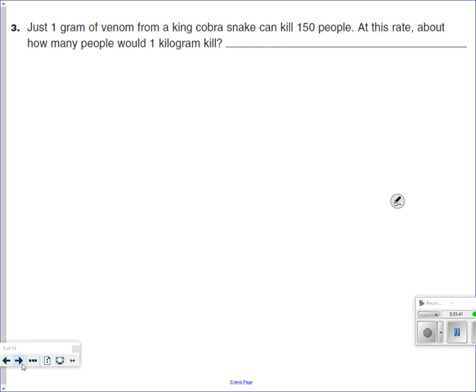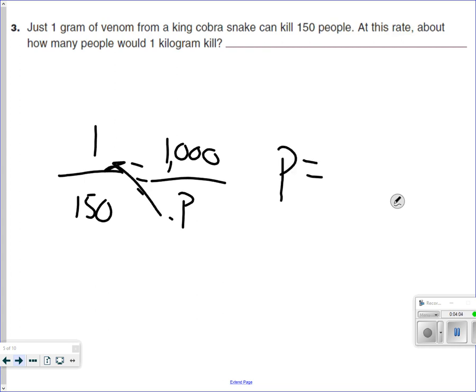Let's do another one. Just 1 gram of venom from a king cobra snake can kill 150 people. So 1 gram can kill 150 people. At this rate, how many people would die in 1 kilogram? 1 kilogram is 1,000 grams, and we want to know P for people. Well, if we multiply, go this direction, we have a P equals, we multiply this, we get 150,000. It's not cross-reducing, it's cross-multiplying.